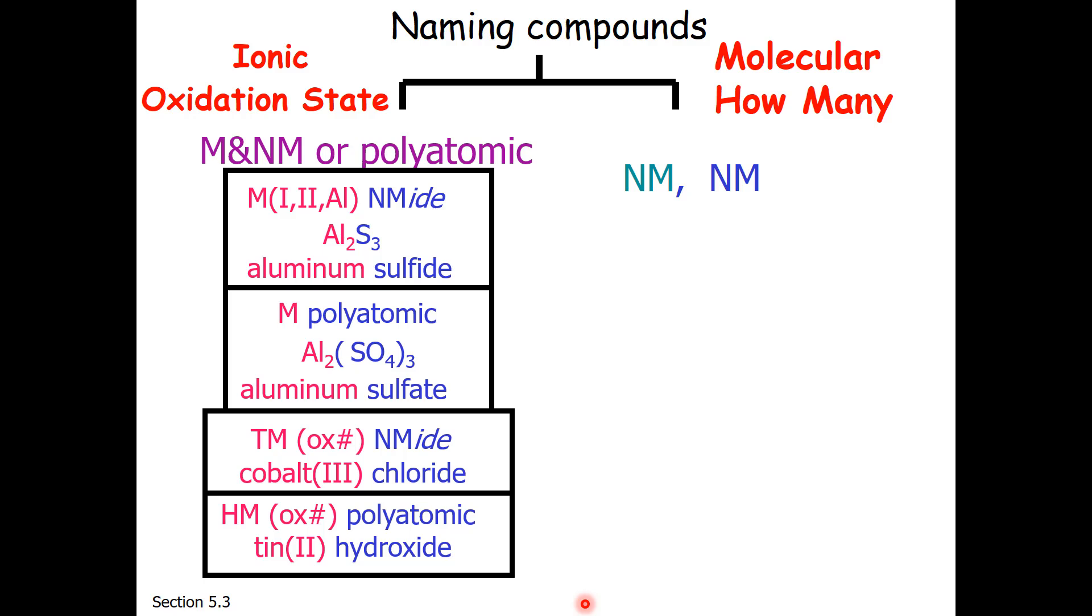Molecular compounds are combinations of nonmetals and nonmetals. So in molecular compounds, we get to say how many. Typically, the less electronegative nonmetal comes first in the compound. It may have a slight positive polarity. And the more electronegative nonmetal comes second in the compound. This typically has a more negative polarity. So we use prefixes for the first nonmetal and prefixes for the second nonmetal. The second nonmetal also gets an -ide ending.